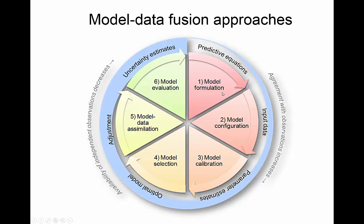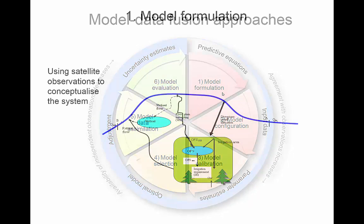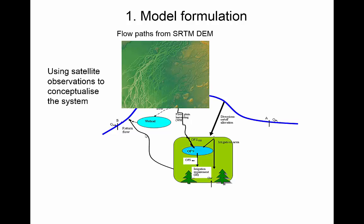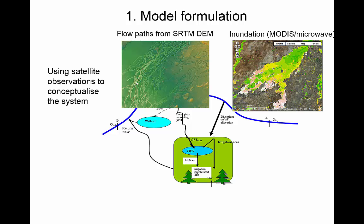You could start by using observations to actually develop your mental model. We may need to develop our predictive equations of how the world works. For instance, I might have a mental model of a river reach: I've got streamflow observations at the upper end, a streamflow observation at the lower end, there's some sort of irrigation area there, and probably some of it makes its way to wetlands and back to the river. But I don't really know exactly how the system works. That's why we can use satellite observations — for instance, flow paths from a digital elevation model that tells us exactly where water may or may not go. We can use open water as observed by MODIS or microwave open water mapping to see the progression of a flood: the flood goes here, sometimes there, but not elsewhere. So we can develop a mental model of this floodplain.